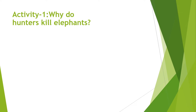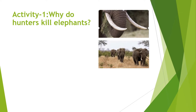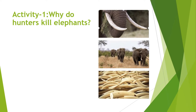Now let us do this first activity. We have to see the pictures given here. These are the pictures of an elephant with their parts. So why do hunters kill these elephants? The tusks are collected here for selling. These are very costly and hunters and poachers, they kill to get these tusks. So from this observation, elephants are killed for their tusks.